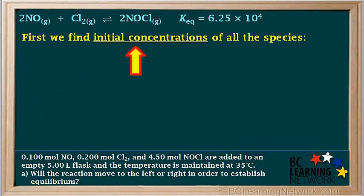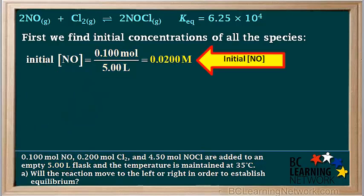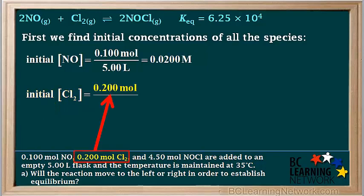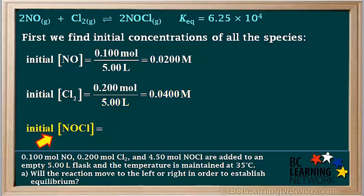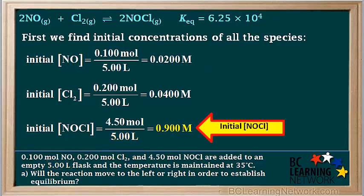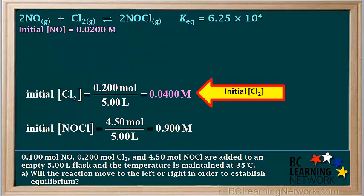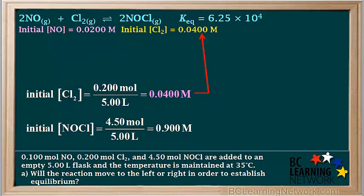The first thing we need to do is find the initial concentrations of all the species. A molar concentration equals moles divided by liters. So the initial concentration of NO equals 0.1 mol ÷ 5 L = 0.02 M. The initial concentration of Cl₂ equals 0.2 mol ÷ 5 L = 0.04 M. We'll make note of these values: [NO]₀ = 0.02 M and [Cl₂]₀ = 0.04 M.